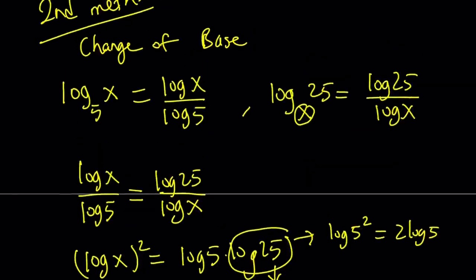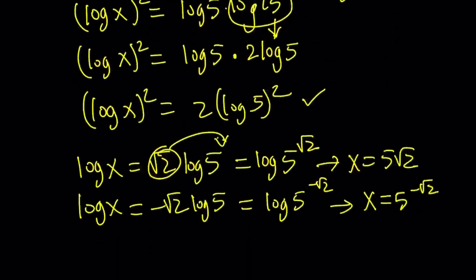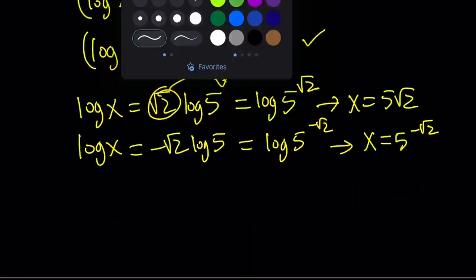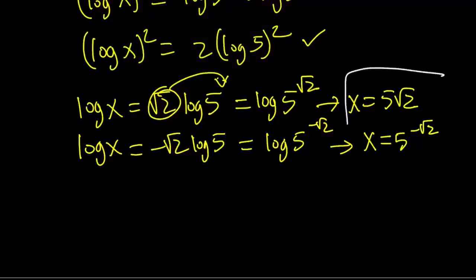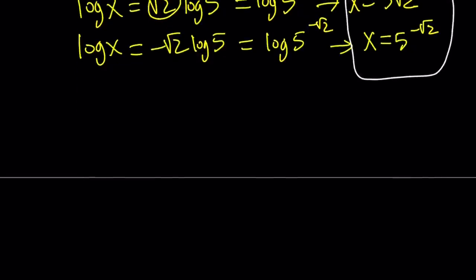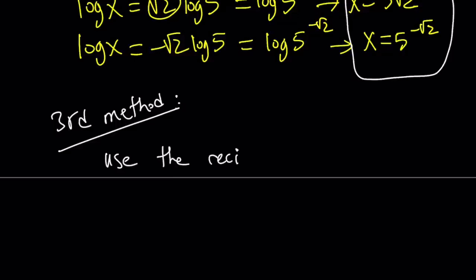As before, remember, we got the same results, just in a different way. So these are the solutions using the second method. Let's go ahead and talk about the third method. For the first method, we basically use substitution. For the second method, we use change of base. And for the third method, we're going to use the reciprocal rule.